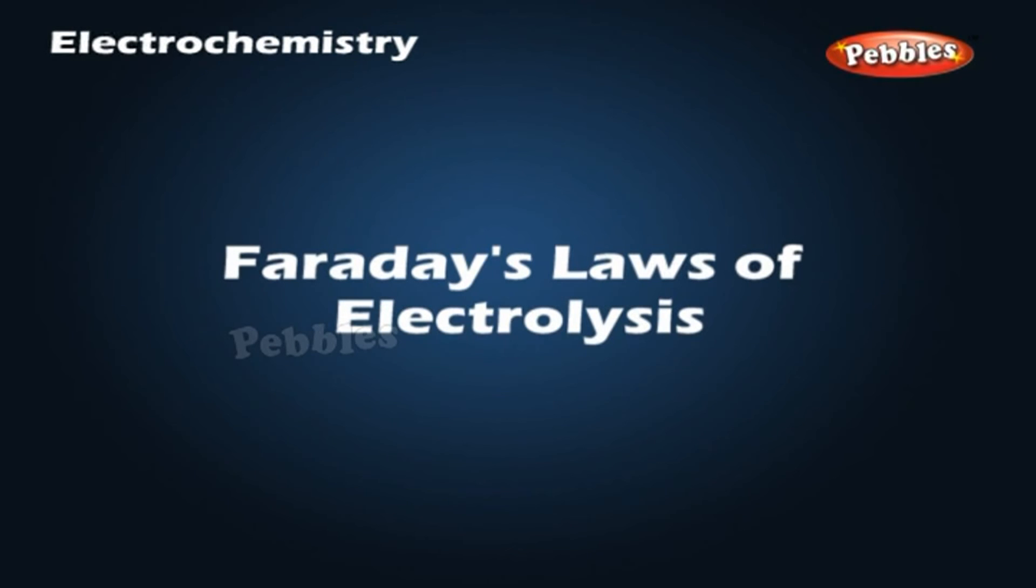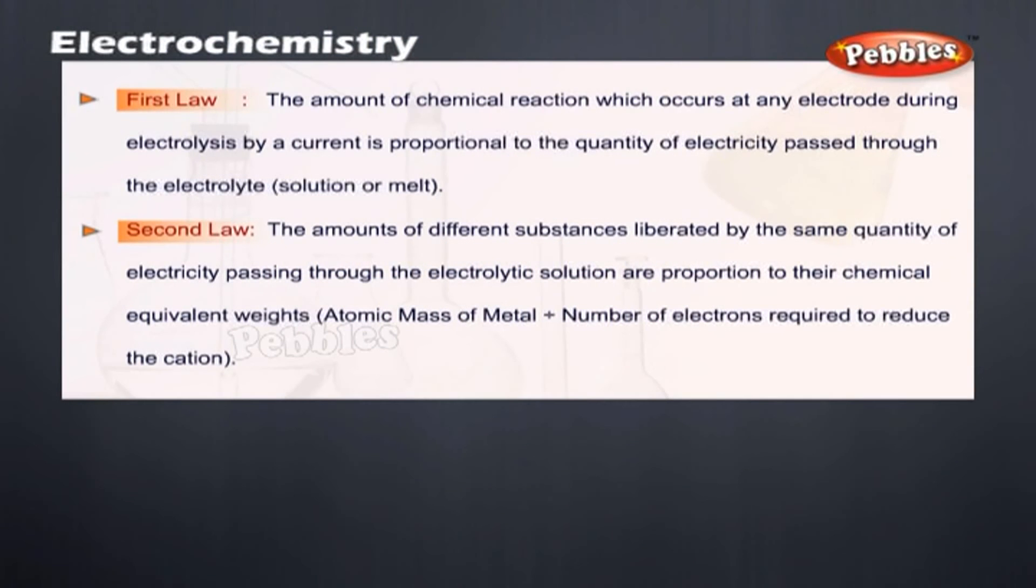Faraday's law of electrolysis. First law: The amount of chemical reaction which occurs at any electrode during electrolysis by a current is proportional to the quantity of electricity passed through the electrolyte. Second law: The amounts of different substances liberated by the same quantity of electricity passing through the electrolytic solution are proportional to their chemical equivalent weights.